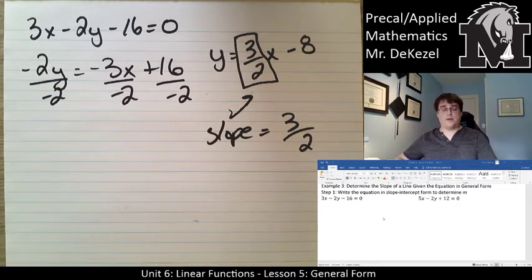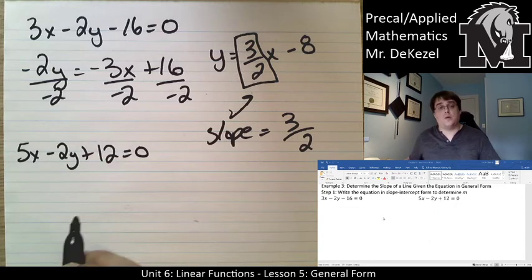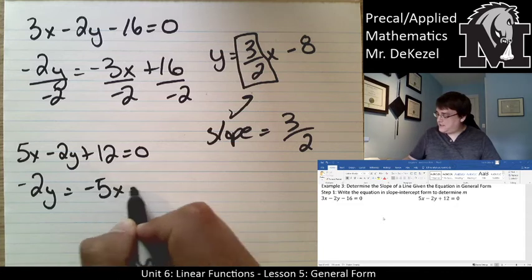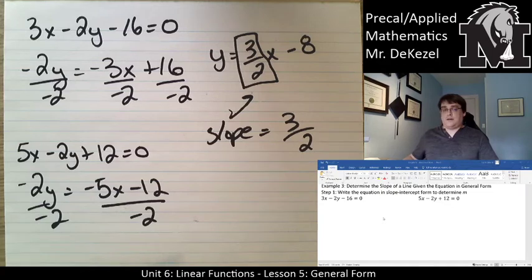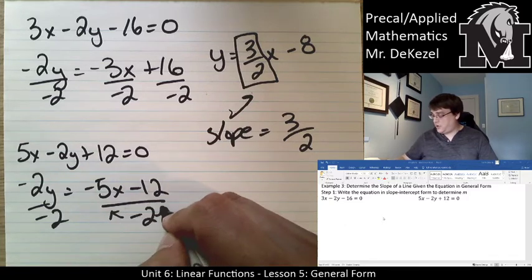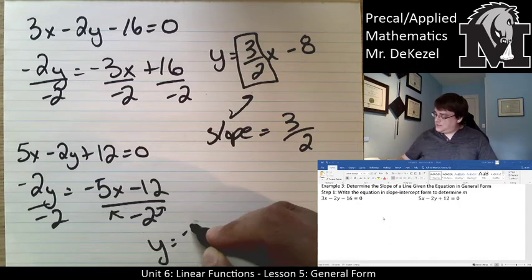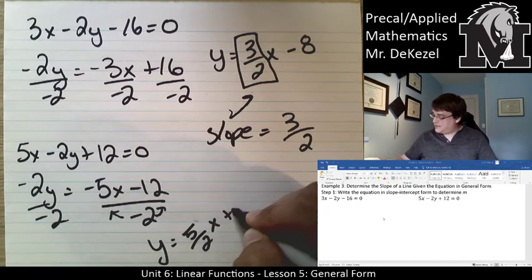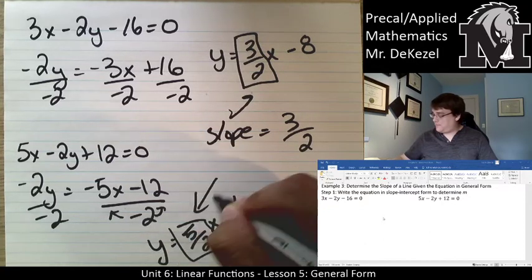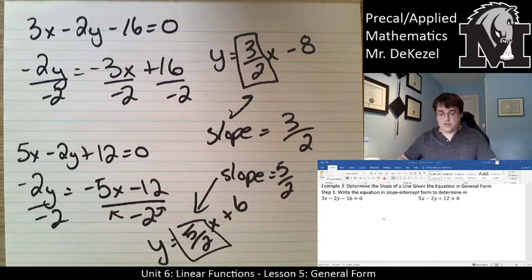Dividing gives y = 3/2x - 8, so the slope is 3/2. For the second example, 5x - 2y + 12 = 0: rearrange to -2y = -5x - 12, then divide by -2 to get y = 5/2x + 6. The slope is 5/2.